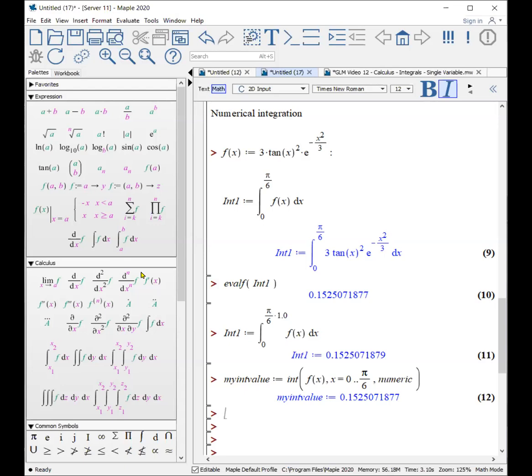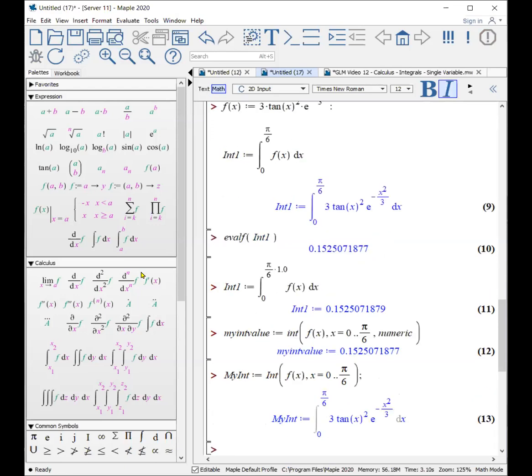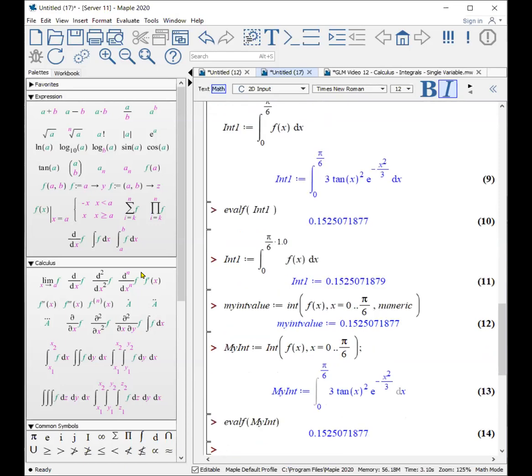The other way I might do it is using what's called this idea of an inert version. So my int colon equals, and now I'm going to use capital int, and this will set up the inert version of the integral, f of x, comma, x equals zero to pi over six. And so that sets it up there. Now I can essentially evaluate the floating point of my int, and it will do it there. Try it yourself.